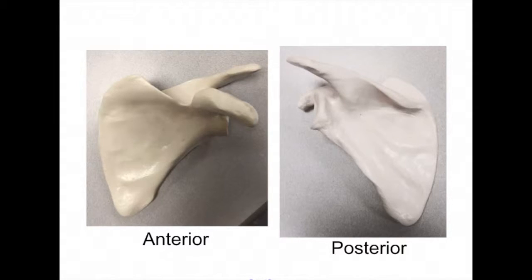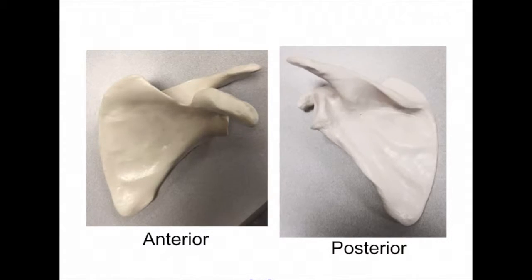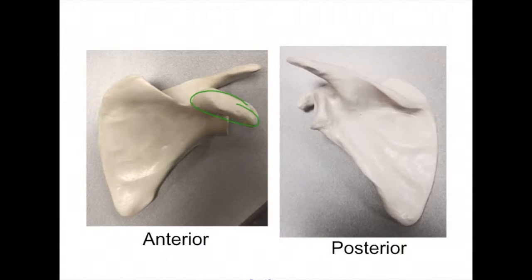We are now looking at the anterior and posterior sides of the scapula, also known as our shoulder blades, which are generally triangular and are commonly called the wings of the humans. On the anterior side, we can clearly see the coracoid process located here. Looking on the anterior side, we see the subscapular fossa located here.